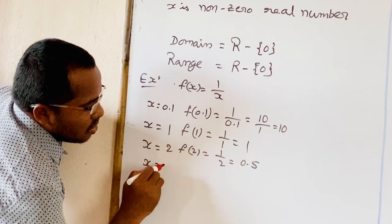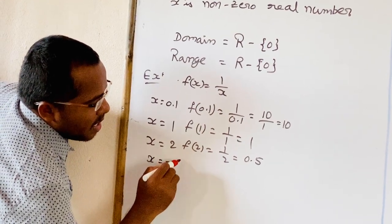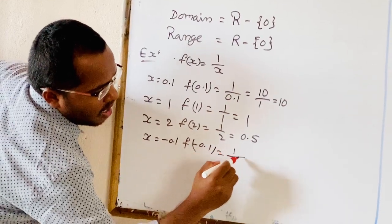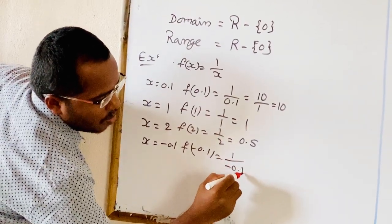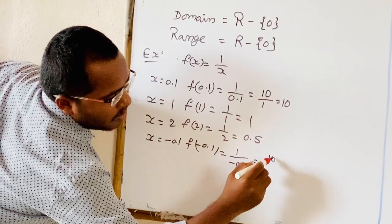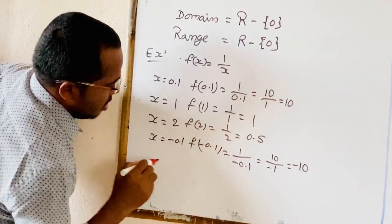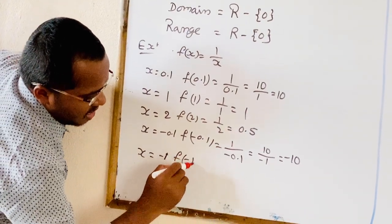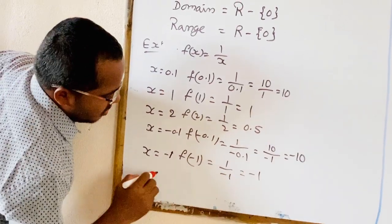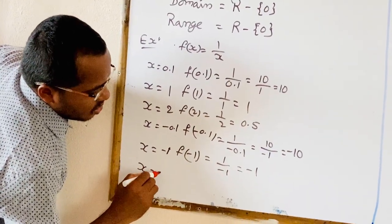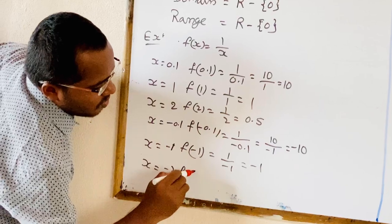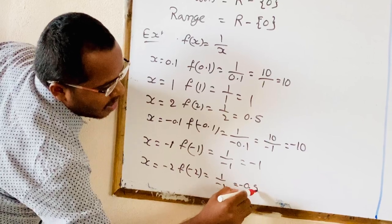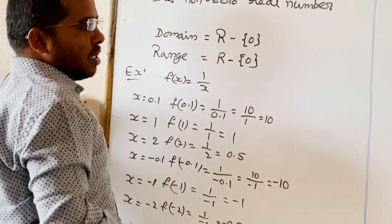Next, x is equal to minus 0.1. f of minus 0.1 is equal to 1 by minus 0.1, which equals minus 10. x is equal to minus 1: f of minus 1 is equal to 1 by minus 1, which equals minus 1. x is equal to minus 2: f of minus 2 is equal to 1 by minus 2, which is minus 0.5. We will plot these points on the graph.